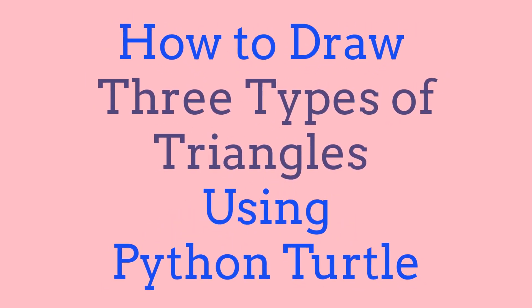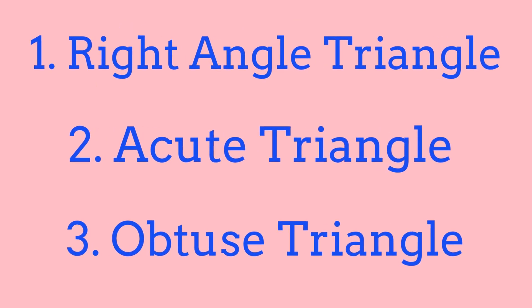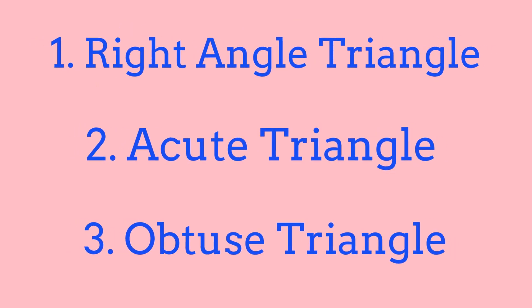Hey everyone, in this video I'll be showing you how to draw 3 types of triangles using Python Turtle. The first triangle we're going to draw is a right angle triangle, the second one will be an acute triangle, and finally the third one will be an obtuse triangle.